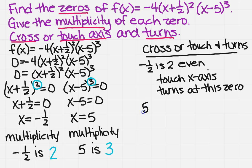So now for the other one we said five is three for its multiplicity which is odd. So now if it's odd it's going to only cross the x axis.